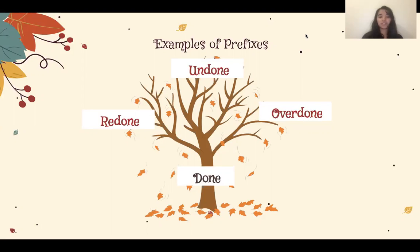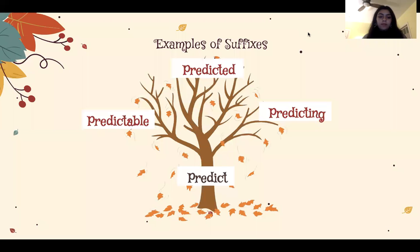Adding the prefix over to create the word overdone means something has been done too many times. For example, my music teacher told me the holiday song Jingle Bells has been overdone and asked me to sing a different song for the talent show. Some common suffixes are able, ed, and ing.